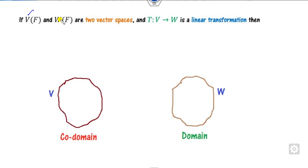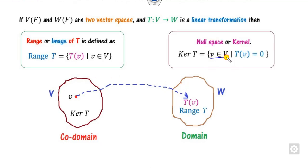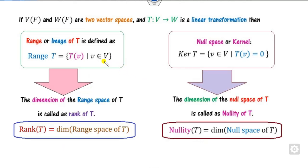Suppose you have vector spaces V and W and a transformation T from V to W. The range of this transformation, denoted R(T), is the collection of all elements in W such that you take an element V from the domain and map it. The kernel is the collection of all elements whose image is 0. The dimension of the range space is called the rank, and the dimension of the kernel of T is called the nullity.